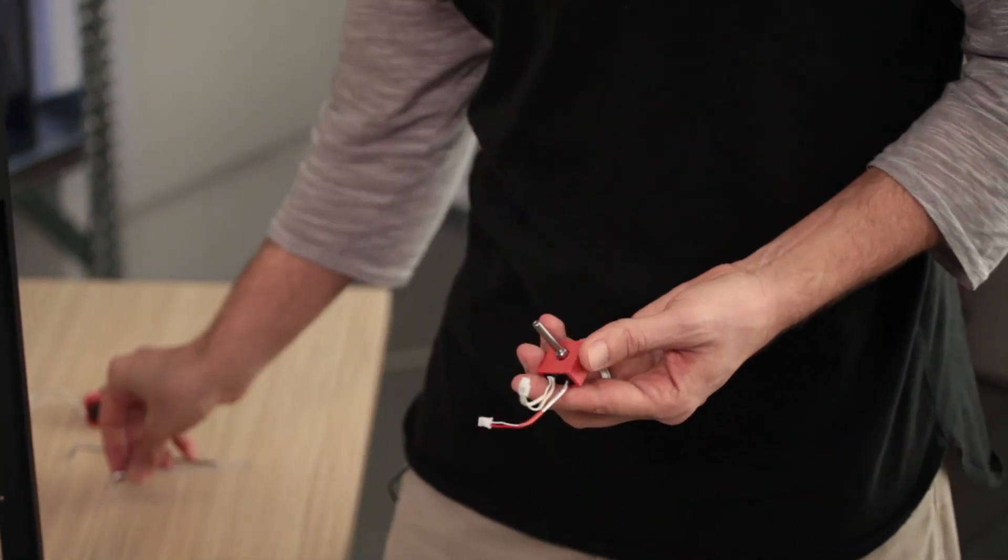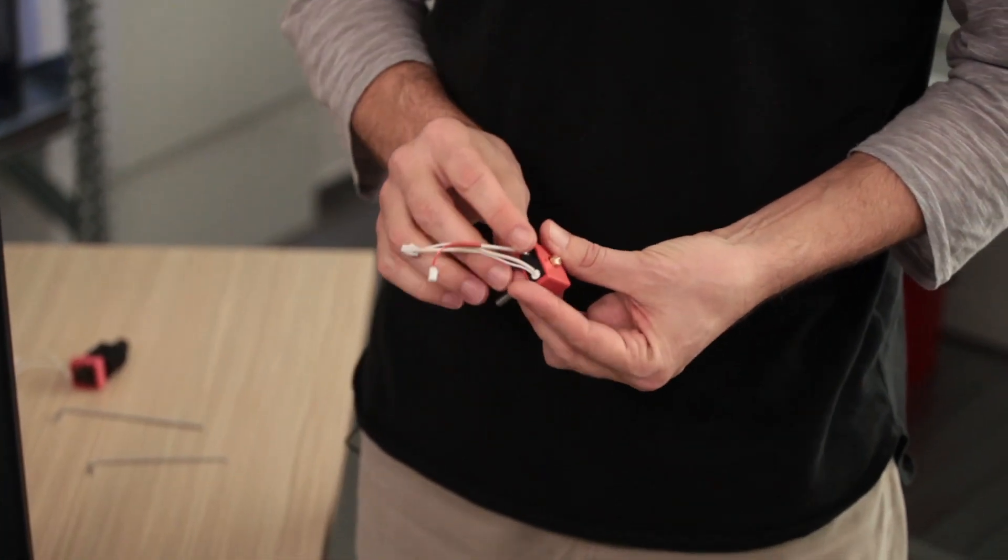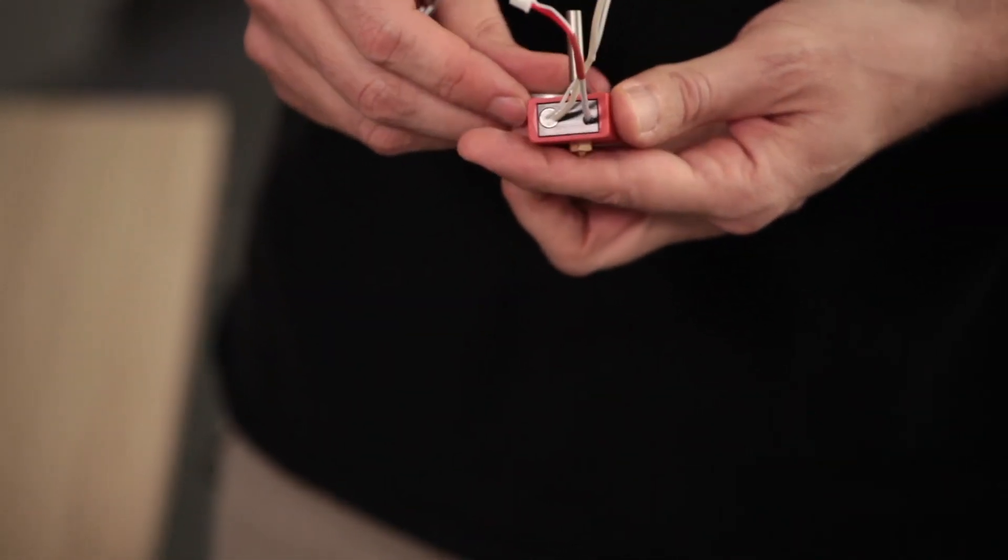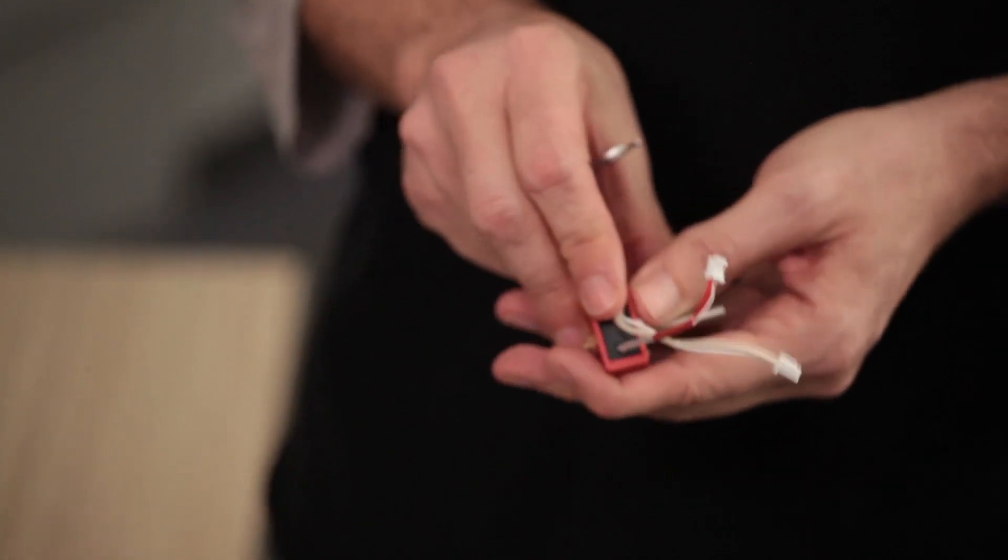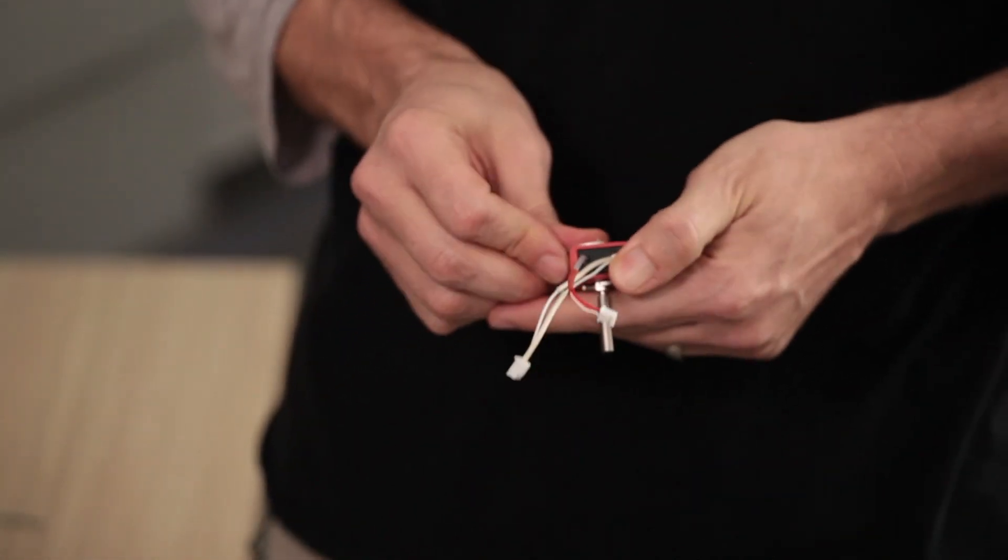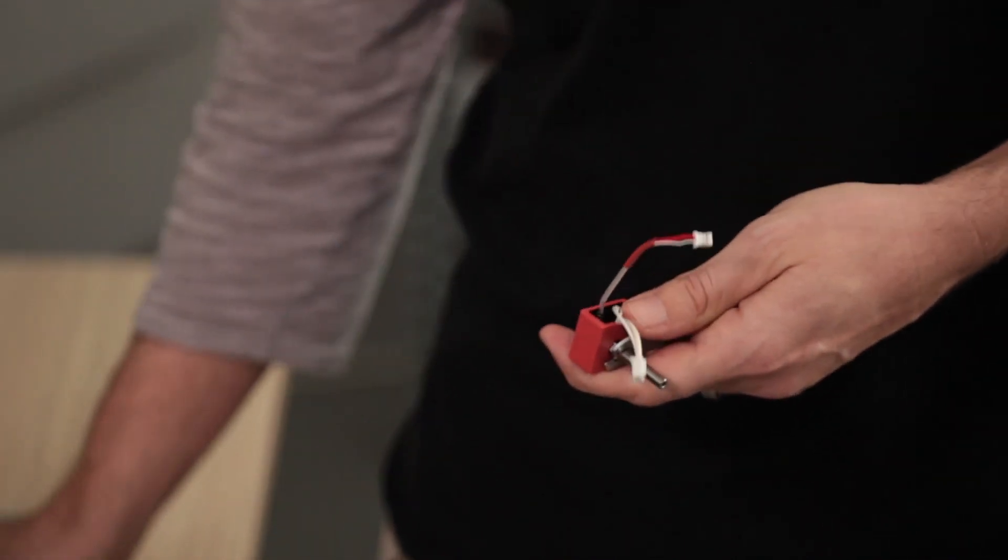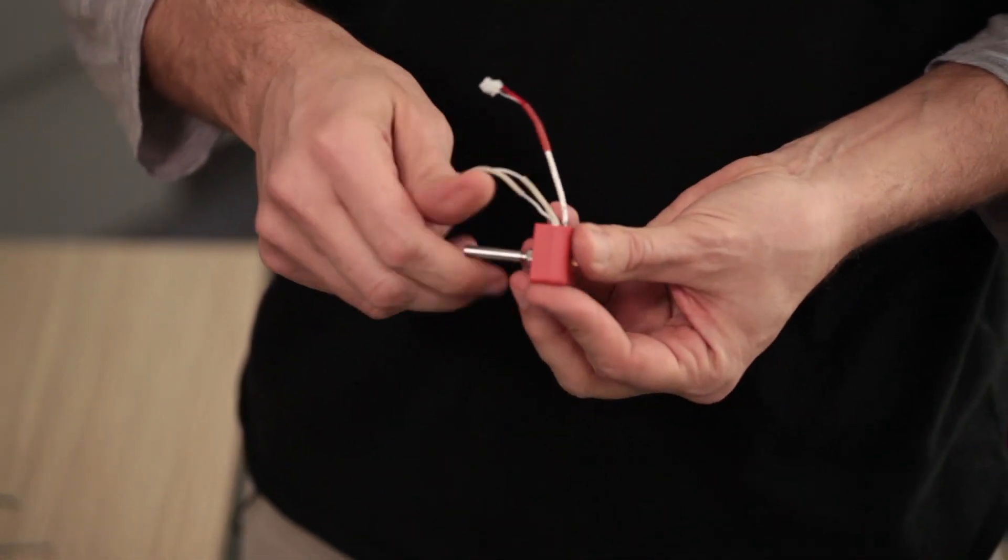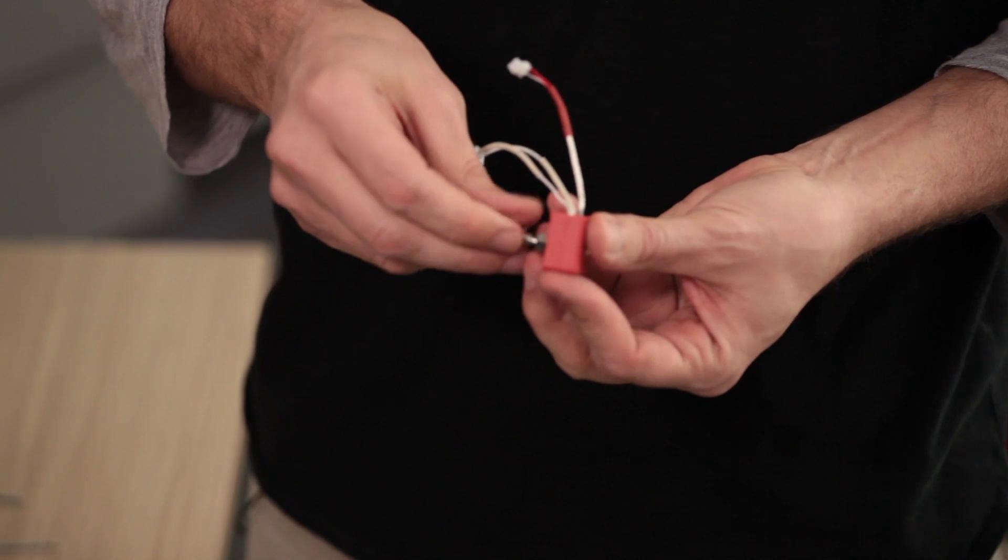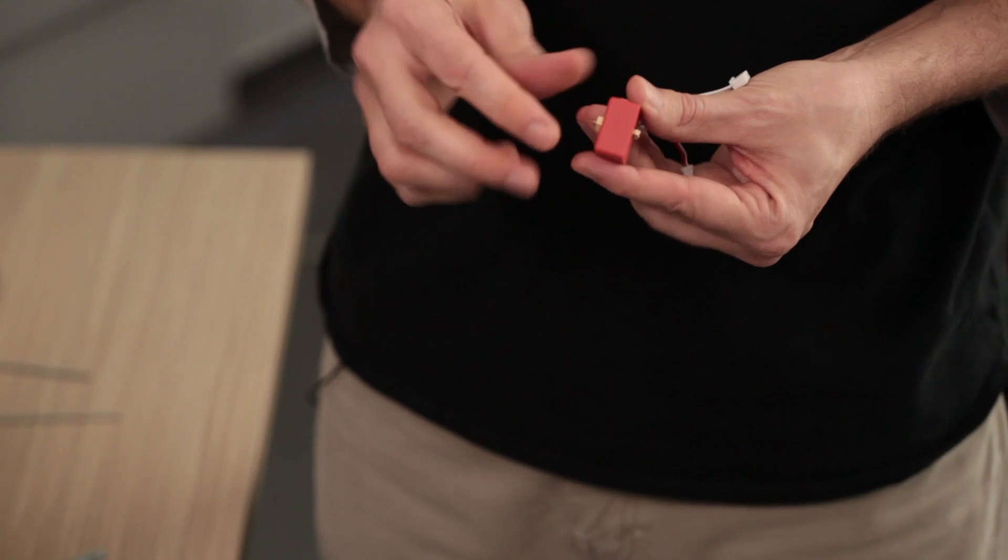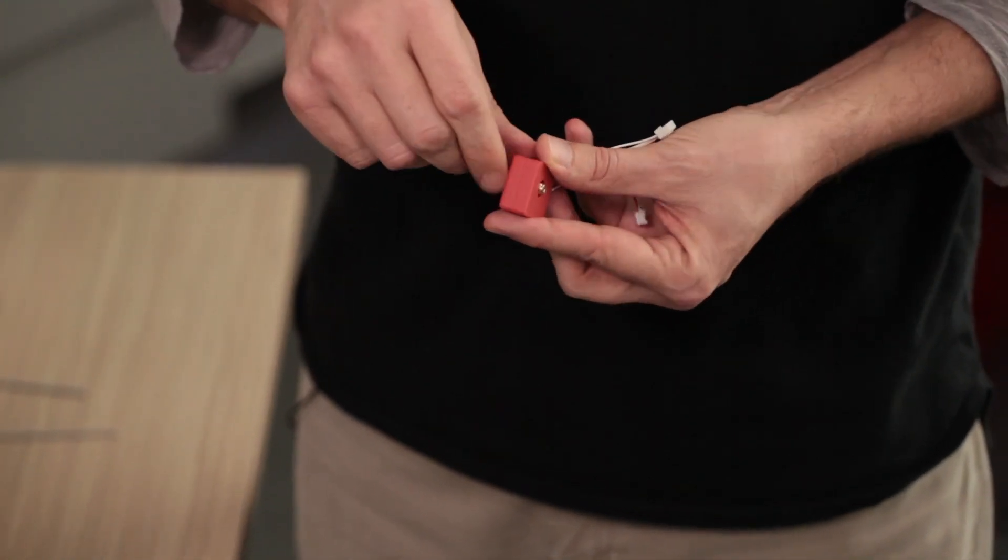Looking at the actual hot end, the first thing we're going to do is grab the two wrenches that were provided to you with your printer. We're going to loosen until you feel them come apart. And now it doesn't matter which order you unscrew them in, but both the heat brake and the nozzle can now be removed from the heat block.